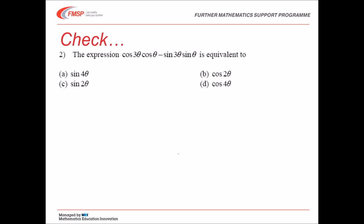If you've had a go yourself, here's the solution. We've got the expression cos 3 theta cos theta minus sin 3 theta sin theta. Well, that looks to me like cos a cos b minus sin a sin b, where a is 3 theta and b is theta. So that must be equal to cos of 3 theta plus theta. And that's cos of 4 theta, which is answer D.